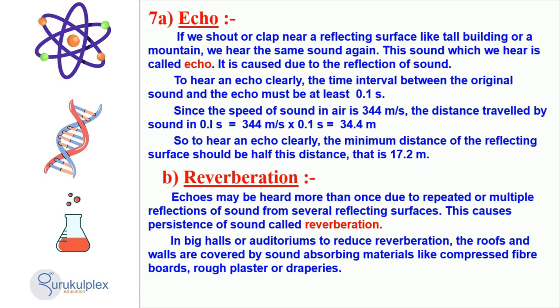Reverberation occurs when sound is repeatedly reflected off of multiple surfaces. It is commonly heard in large halls and auditoriums. To reduce reverberation, roofs and walls are often covered with sound-absorbing materials like compressed fiber boards, rough plaster, or draperies.